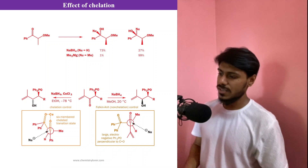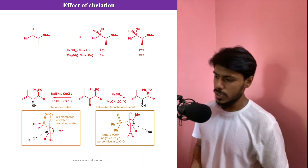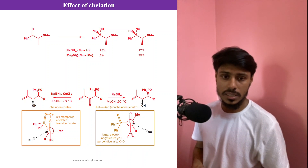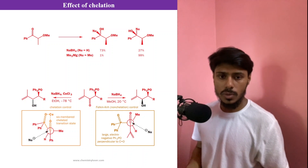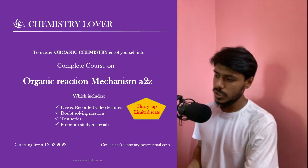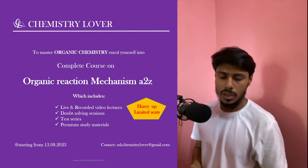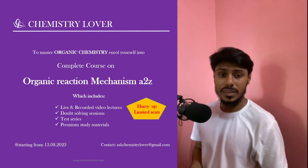That is the effect of chelation on the Felkin-Anh model. I have covered almost all the examples from Clayden's book and some other books; the principle will remain the same. I hope this video helps you understand the Felkin-Anh model and how to predict diastereoselective reactions on carbonyl groups. We are also going to launch a full live course on organic reaction mechanism A to Z — the link will be in the description, and classes start from the 13th of August.